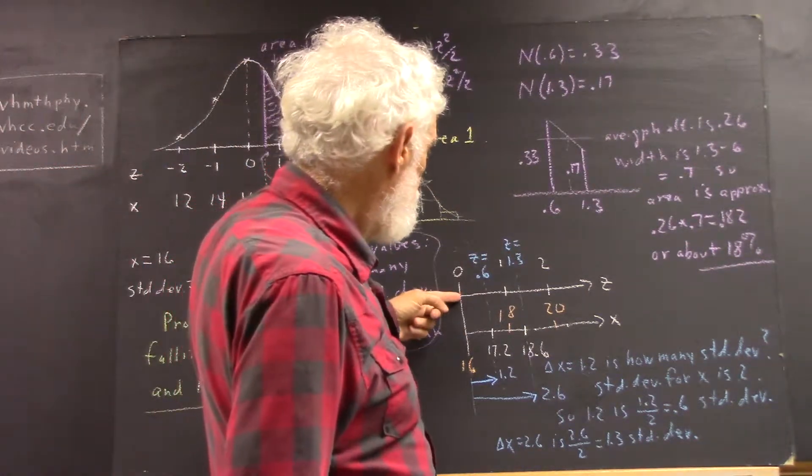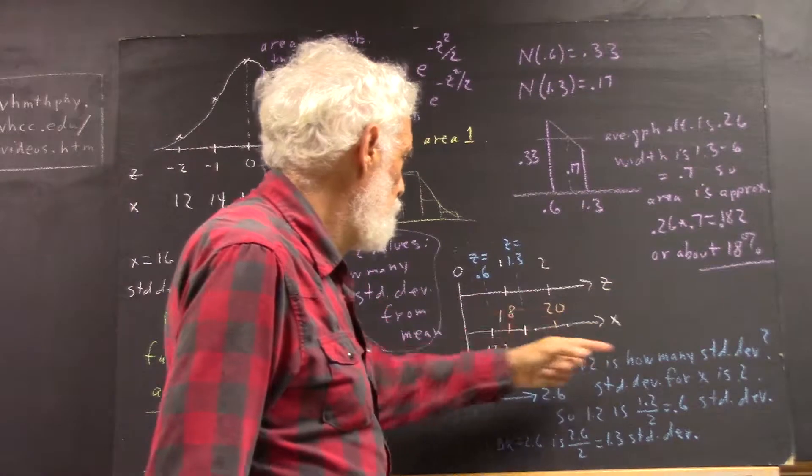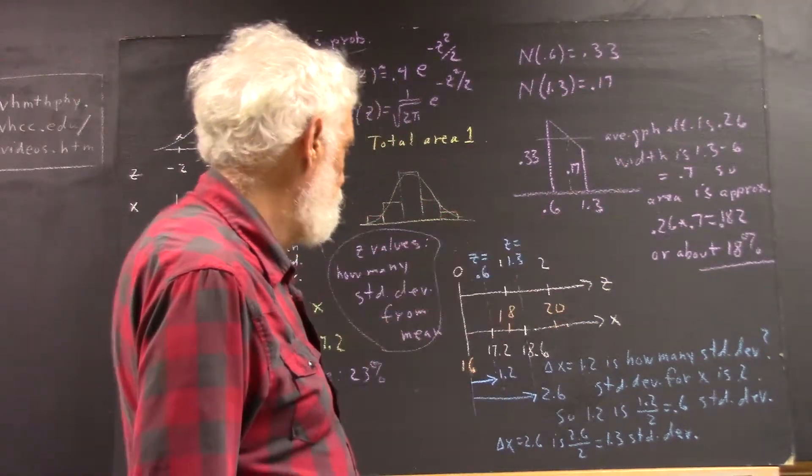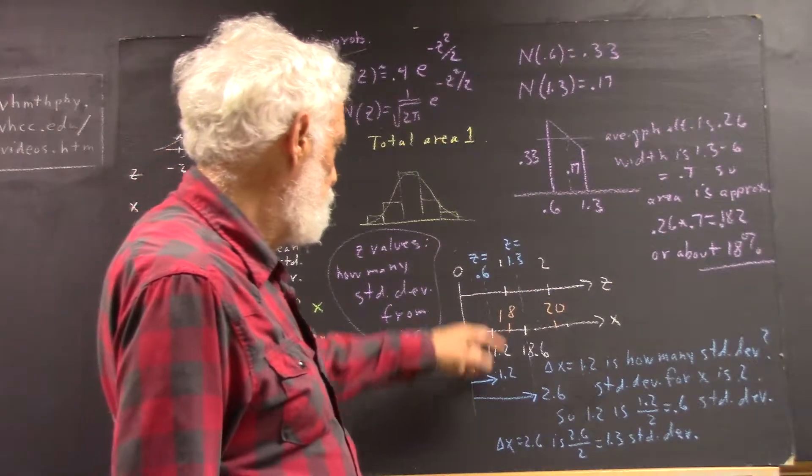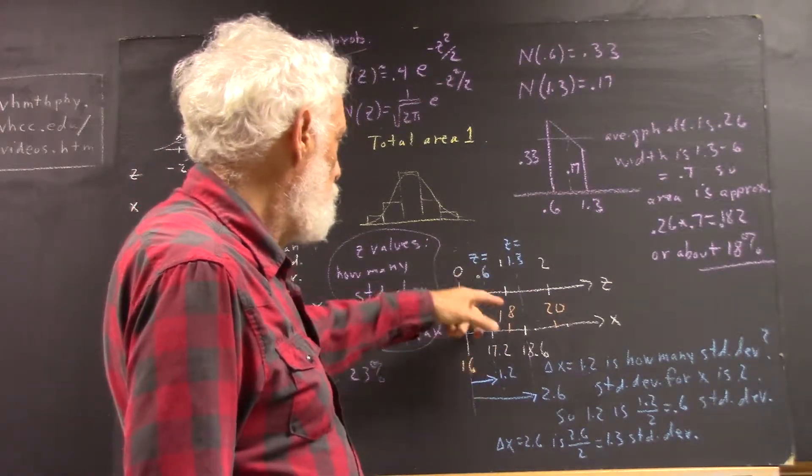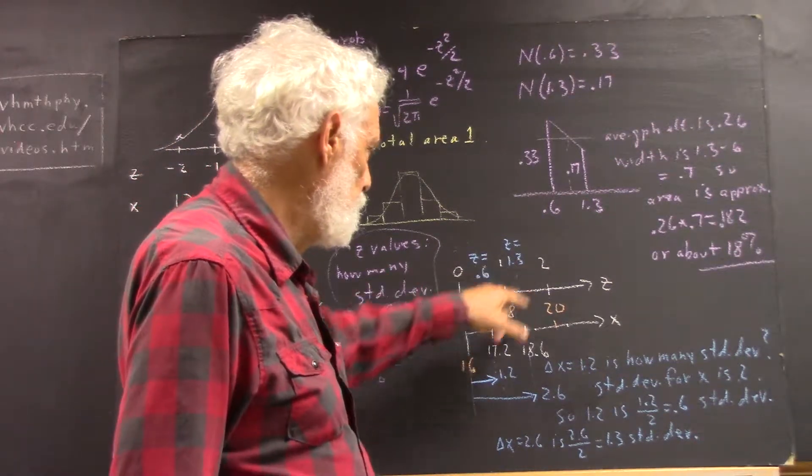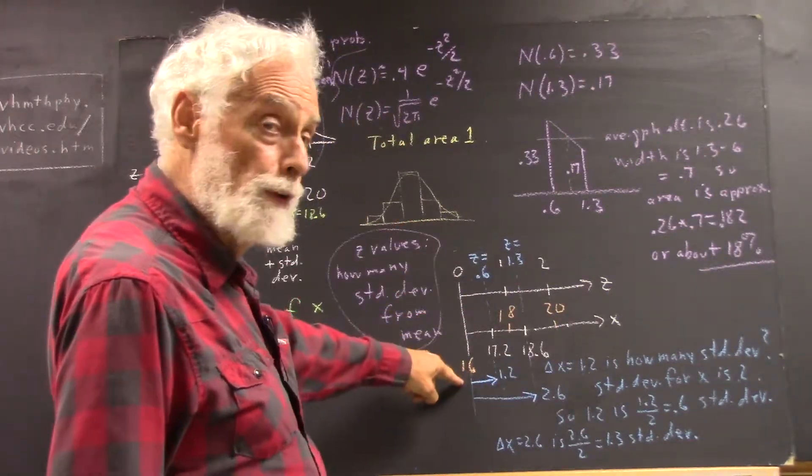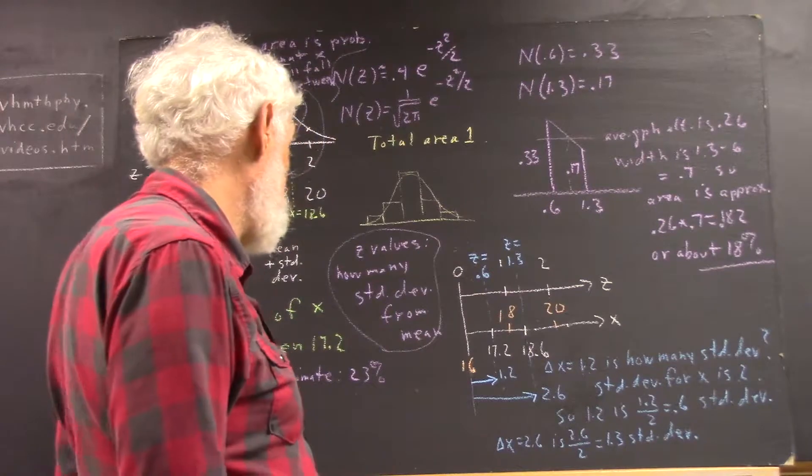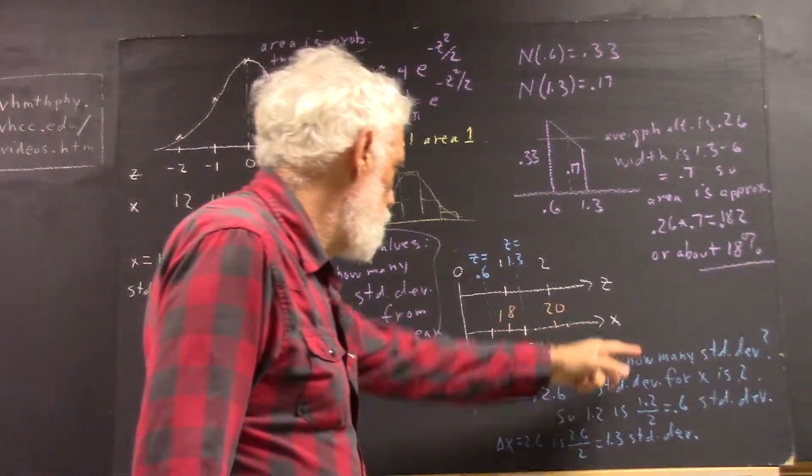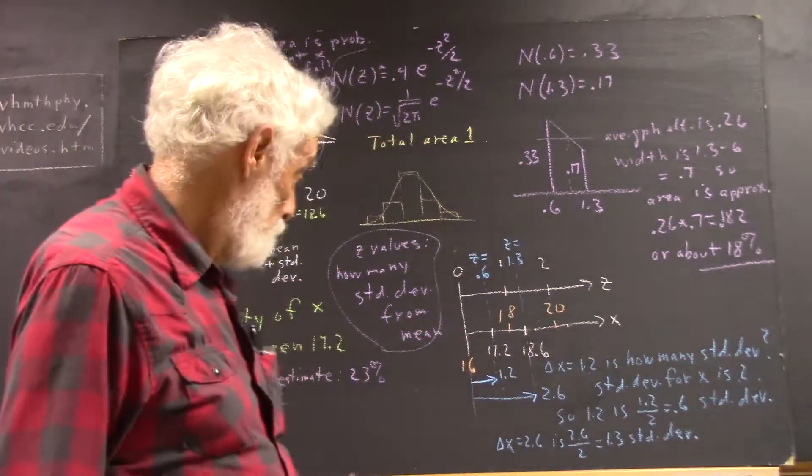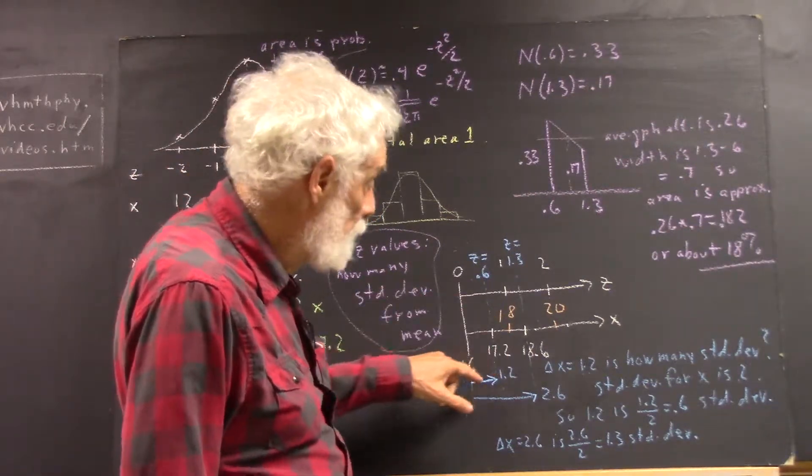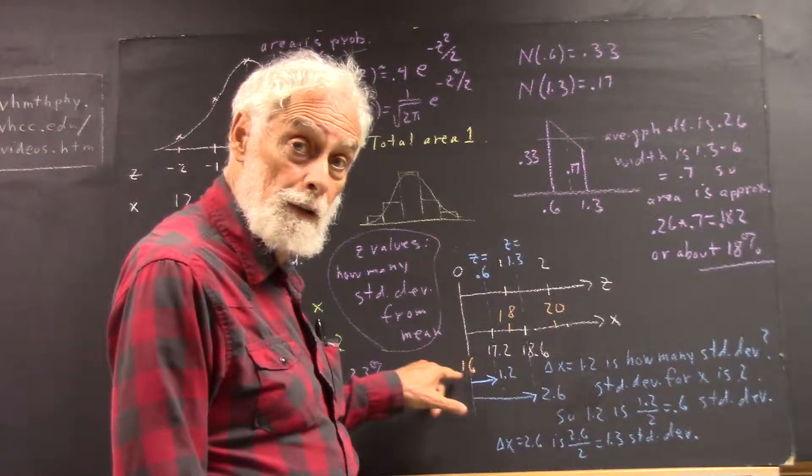So here I've drawn z values from 0 to 2 and beyond, but I've labeled the z values 1 and 2. And I've labeled the x values corresponding to z equals 1 and 2. Those would be 18 and 20. And also z value 0, the corresponding x value is 16. Now, if our x value is 17.2, the argument is pretty simple. That means that we're 1.2 units on this side of the mean.